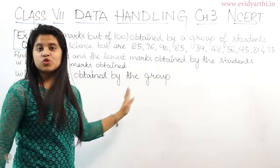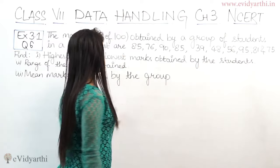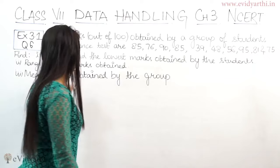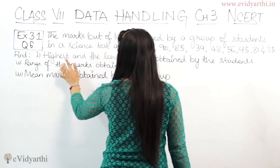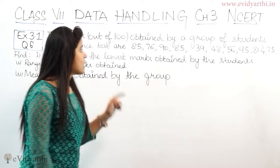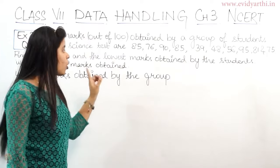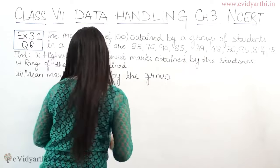Here we have the marks given for a group of students. We have to find the highest and the lowest marks obtained by the students — highest marks obtained and lowest marks obtained.